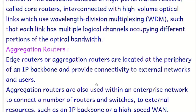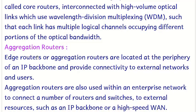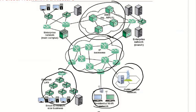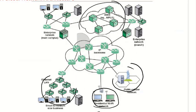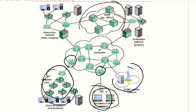Aggregation routers are also called edge routers. The name 'edge' is appropriate because they are located at the periphery — the boundaries of the IP backbone — and they provide connectivity to external networks and users. Within an enterprise network, aggregation routers connect a number of routers and switches and connect to external resources such as the IP backbone or high-speed LANs. They serve as the communicating interface between the IP backbone and other networks.